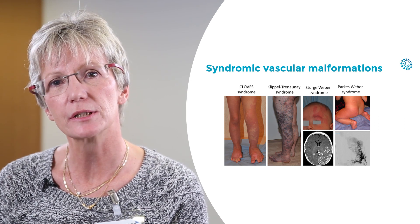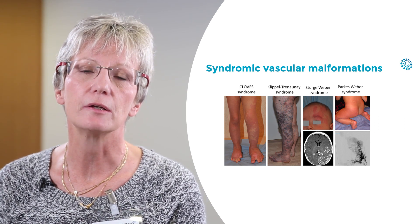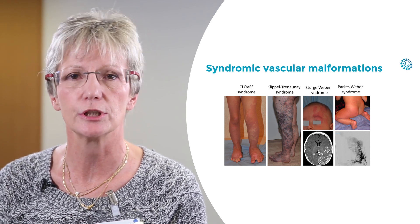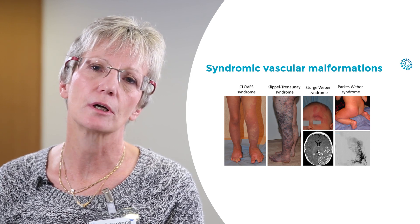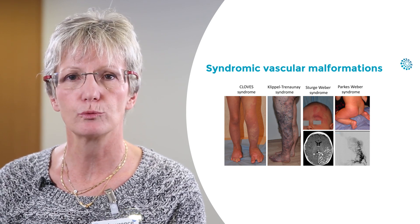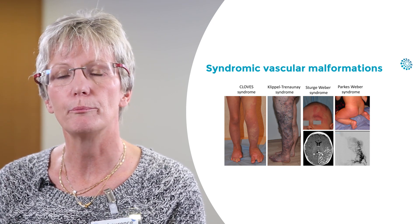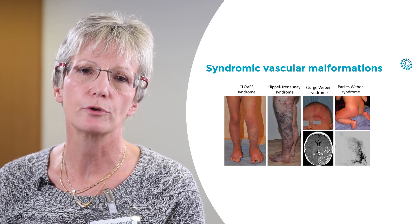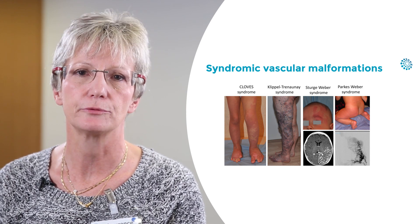The Klippel-Trenaunay syndrome, which combines capillary, venous and lymphatic anomalies with overgrowth of the affected tissue. The Sturge-Weber syndrome, where there is a risk of glaucoma and epilepsy. And the Parkes-Weber syndrome, which is characterized by a capillary blush of the extremity, with overgrowth and multiple arteriovenular malformations.